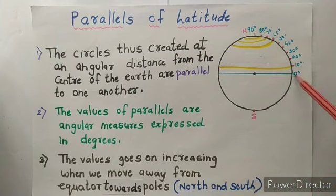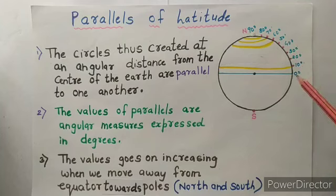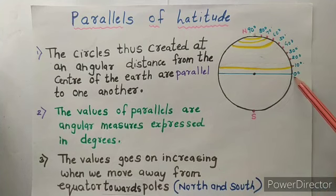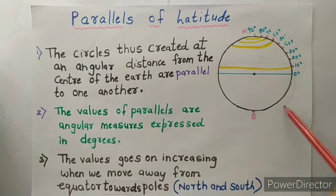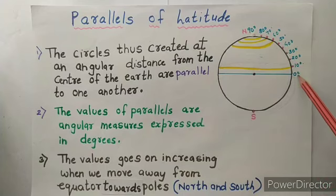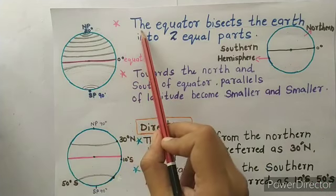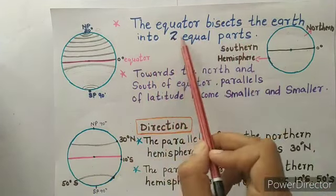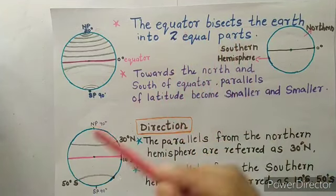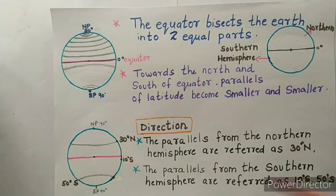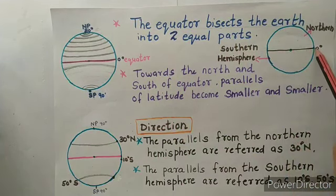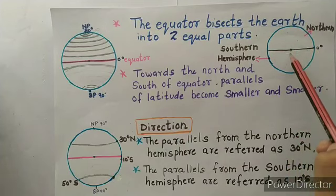The values go on increasing when we move away from the equator towards the poles. Starting from 0 degrees at the equator, as you move towards the north pole at 90 degrees or towards the south pole, the degree values increase. The same applies to the southern hemisphere. The equator bisects the earth into two equal parts — bisects means divides into two equal parts.